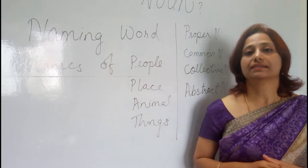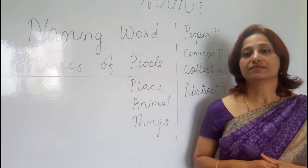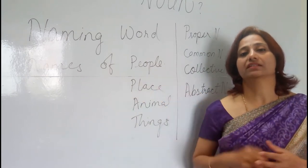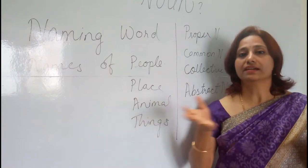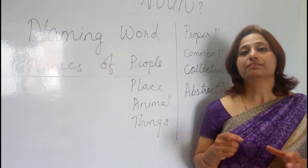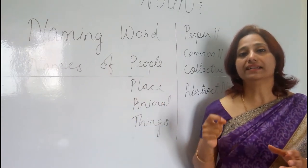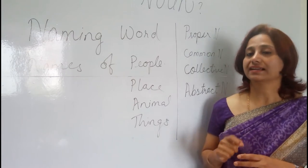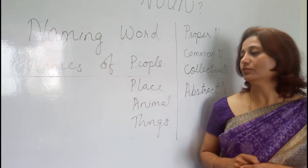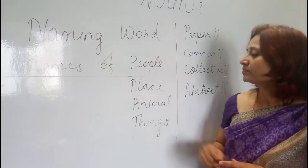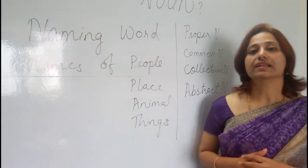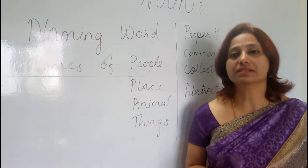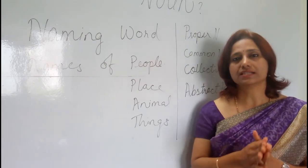Today when you go to certain functions, halls are given specific names like Gangotri or Godavari, so that people can identify and reach the particular place correctly without getting confused. Now, are animals common nouns or proper nouns?